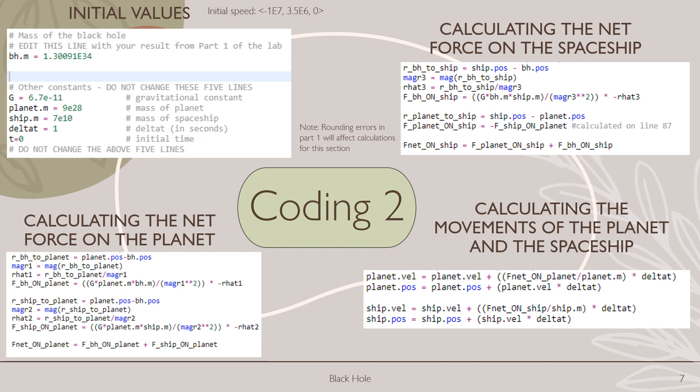Now we're going to calculate the net force on the spaceship. To do this, we'll use the gravitational formula and just plug in our values. We're going to do the same thing again to calculate the net force on the planet, just using the gravitational formula and plugging in our values. Finally, after all of that is done in the bottom right, we'll use our velocity update formula and our position update formula to calculate the movements of the planet and the spaceship.